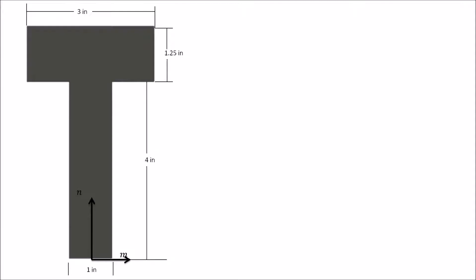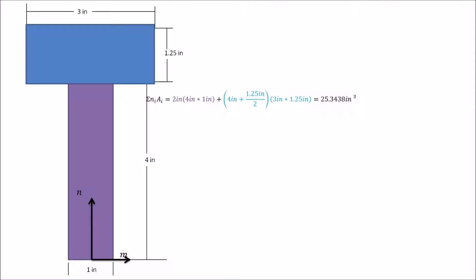First, let us calculate the neutral axis. We will apply axes M and N at the base of the web, and we only need to calculate the neutral axis about the M axis, since the N axis is a line of symmetry. We calculate the summation of ȳᵢAᵢ — the distance from the midpoint of a section to the M axis multiplied by its area. The purple section gives 2 inches times 4×1 inches, and the blue section gives (4 + 1.25/2) inches times 3×1.25 inches, for a total summation of 25.3438 inches cubed.